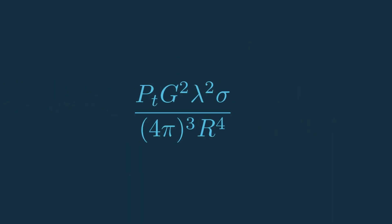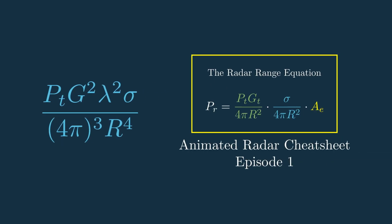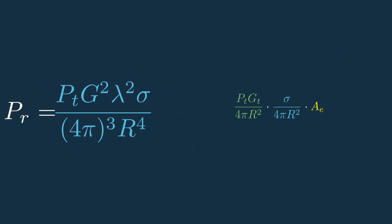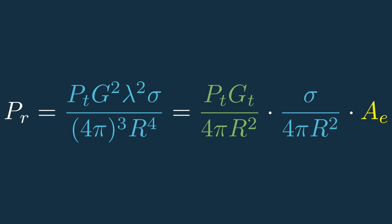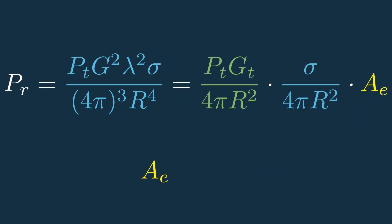Let's start with the signal portion, which is actually the exact equation we went into in the range equation video, which gives you received power. The only difference is how this AE term, or the effective aperture, is represented. You can also say it's equal to the receive antenna gain times the wavelength squared over 4π.